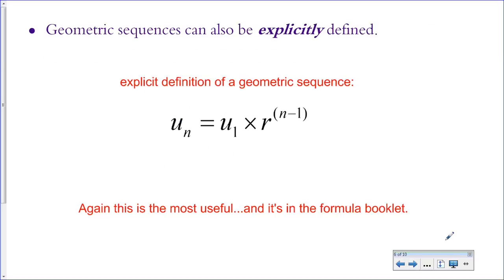This is the much more useful definition — geometric sequences can be explicitly defined. Here you can plug in n, which is any term that you want to find, and figure out what the value of that term is. You could use this to find the 50th term, the 18th term, or any term. This is the one that's in the formula booklet that you're going to use a lot on IB exams. The formula is u sub n equals u sub 1 — the first term — times r to the power of n minus 1, where r stands for the common ratio.